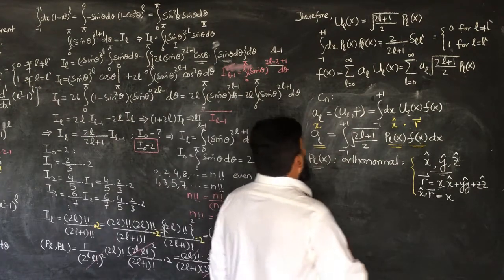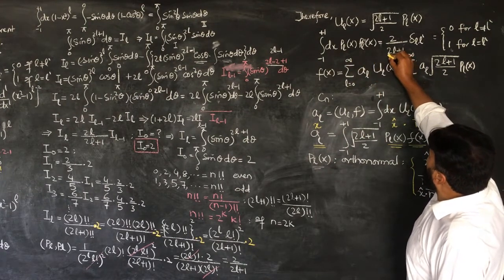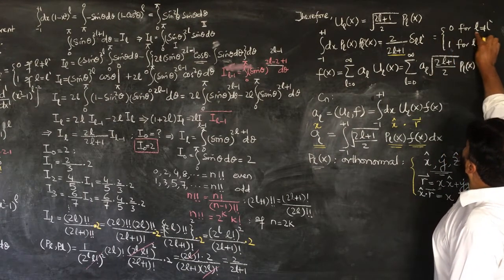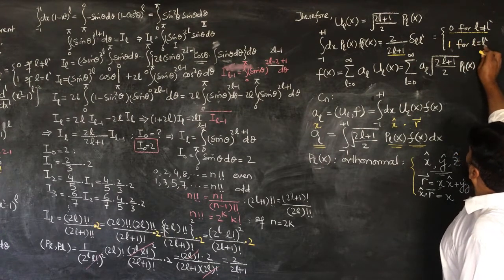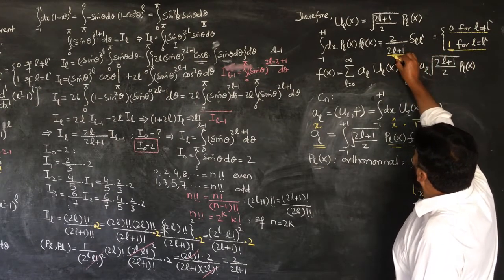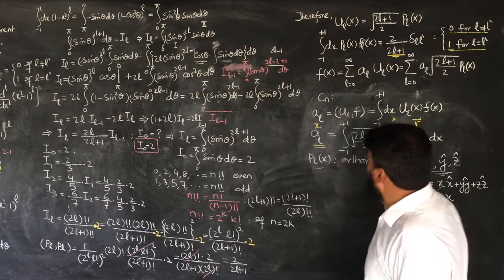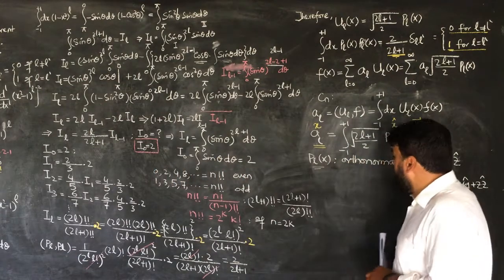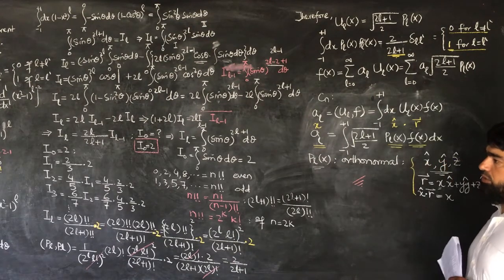So, as we did: the two Legendre polynomials are normalized by this constant, giving delta_{LL'}. This equals 0 when L does not equal L prime — that is the orthogonality condition — and equals 1 when L equals L prime — that is the normalization condition — which is achieved by finding the normalization constant 2 over 2L+1. With this, we are done with the properties of the Legendre polynomials.